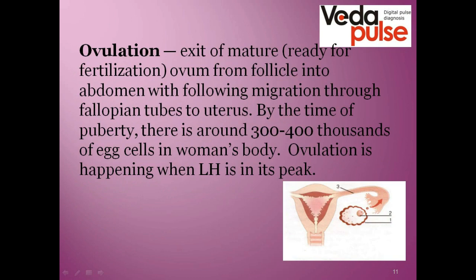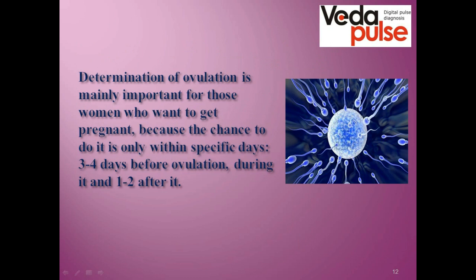After the end of the first phase comes ovulation. The follicle that was developing during the first phase ruptures and the ovum comes out. It is released through the ovary into the peritoneal cavity, and the cilia of the fimbriae sweep the ovum into the fallopian tube. When a girl is born, she already has around three to four hundred thousand egg cells stored in her body. With puberty, each month one cell maturates. During ovulation, the egg cell is ready for fertilization, making this the most favorable period for pregnancy. Ovulation always happens when the luteinizing hormone is at its peak.